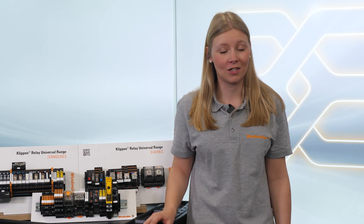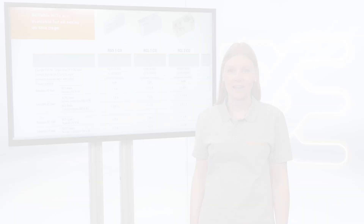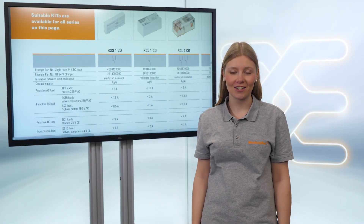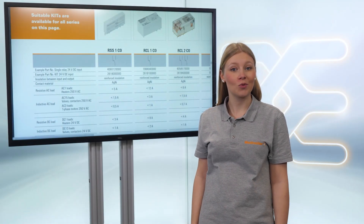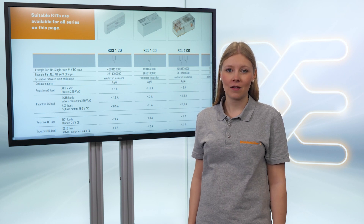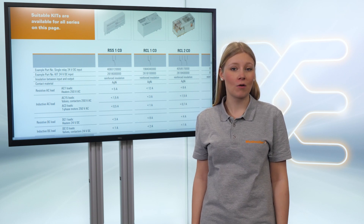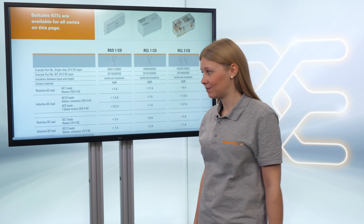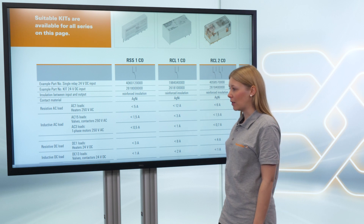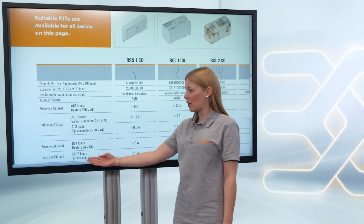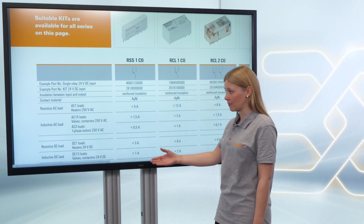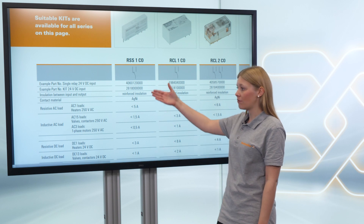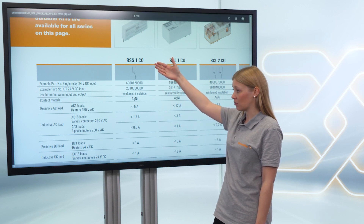Hey Reitmüller, do you have a solution for me to find the best relay for my application? In our brochure, the selection guide for electromechanical relay modules, we provide the customer information about the correct dimensioning. Let's take the lifetime as an example. I want to switch a 24 volt DC valve with 200 milliamps. In the table, I find the Temp series as a one change-over.